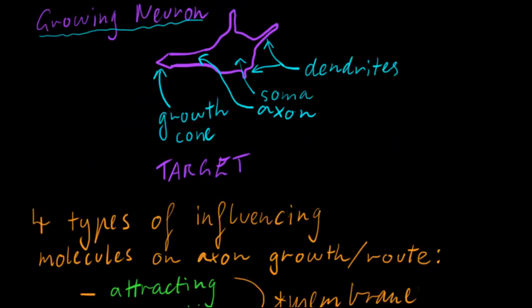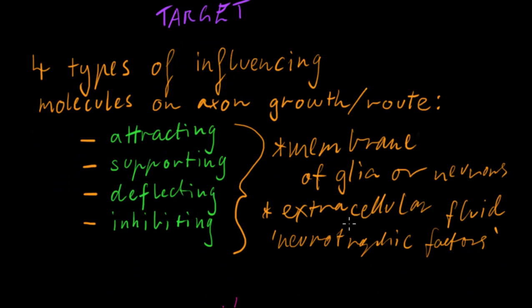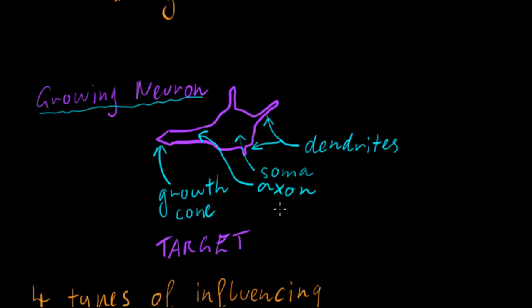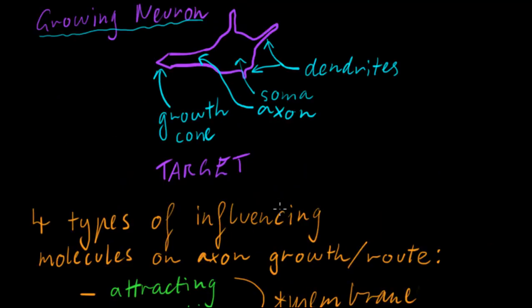Let's go back to our example. Considering these influencing molecules that are attracting, supporting, deflecting and inhibiting, the growing neuron, or the growing axon, is going off and might get deflected or something.